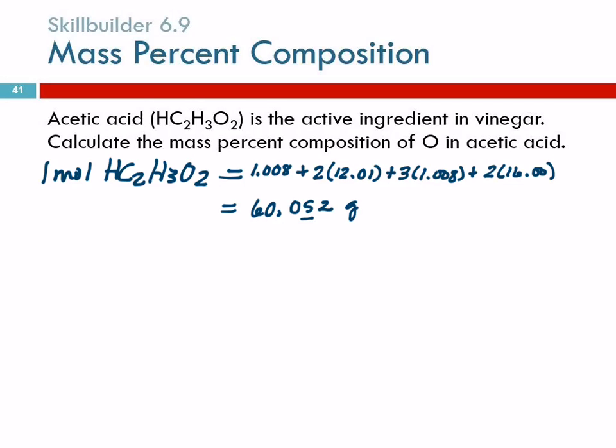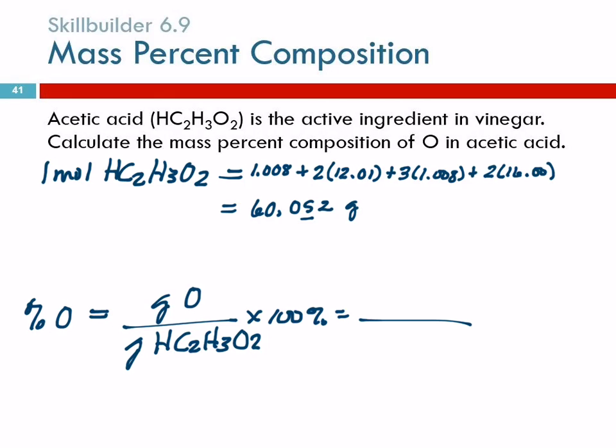We're trying to calculate the percent oxygen in acetic acid. So we're looking for grams of O divided by grams of HC2H3O2 times 100 to make it a percentage. This is the mass of one mole of the entire compound, so that goes in the denominator.